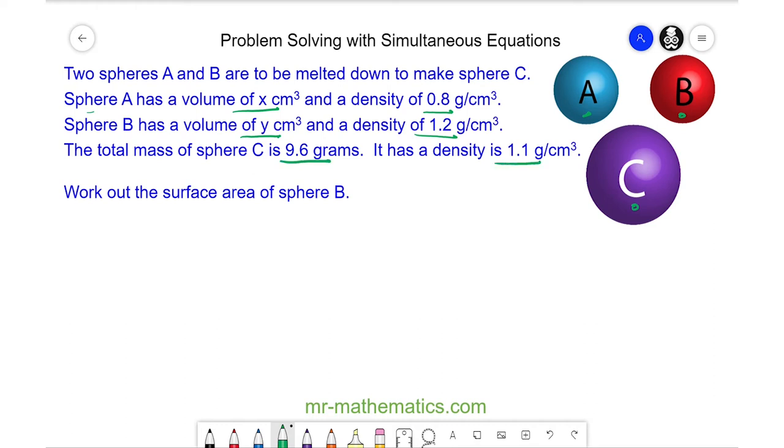Spheres A and B are melted down to make sphere C, and we're going to use this information to work out the surface area of sphere B. To work out the radius, which we need for the surface area, we're going to work out the volume.